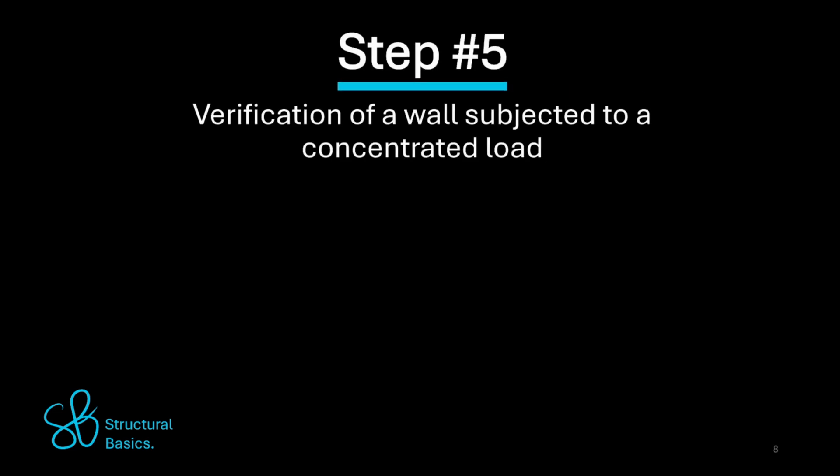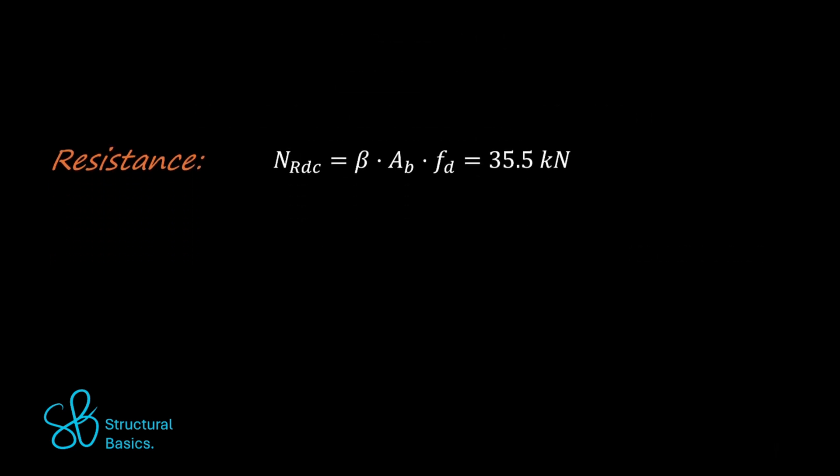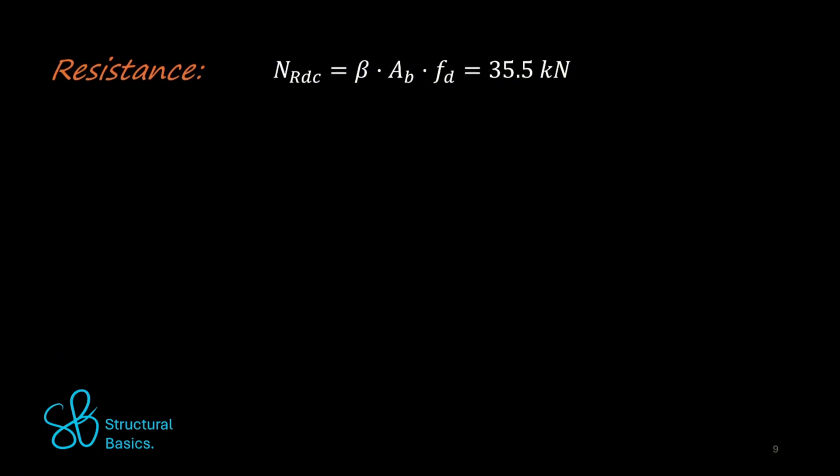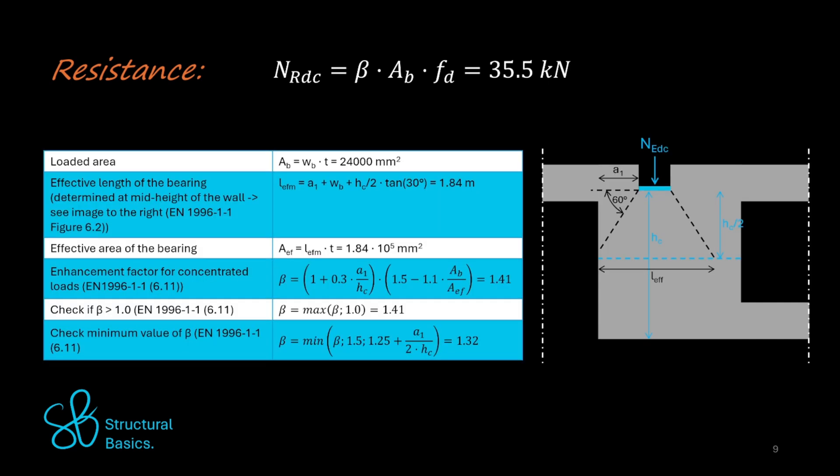In this verification we check that the compression stresses or forces due to the point load from the steel beam can be taken up by the masonry. The resistance of the masonry is calculated according to Eurocode 6 clause 6.10 as 35.5 kN where beta is an enhancement factor for concentrated loads and is calculated according to Eurocode 6 clause 6.11 with these parameters as 1.32.